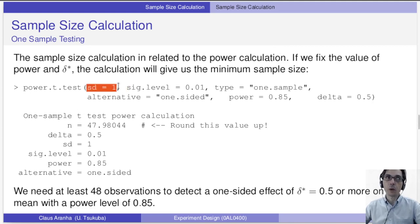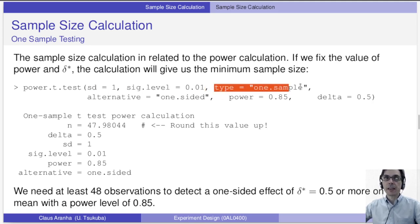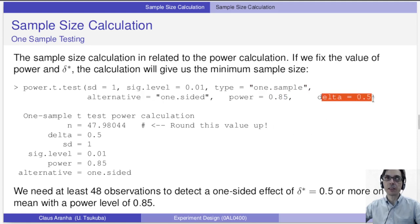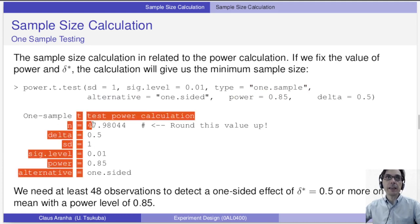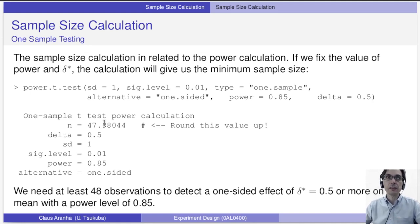Going back to the example from the last video, let's say we have standard deviation of 1, known a priori or calculated using a preliminary test. We set our significance level alpha, the test type as one-sample with a one-sided alternative, and then specify the desired power and desired delta. This gives us a sample size calculation — in this case n is 47.98, which we round up. So for this experiment under these conditions, we need 48 observations in our sample.